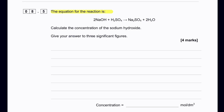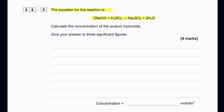To calculate the concentration of sodium hydroxide: first find the number of moles of sulfuric acid used, then apply the 2:1 molar ratio of NaOH to H₂SO₄ from the equation 2NaOH + H₂SO₄ → Na₂SO₄ + H₂O to find the moles of NaOH.